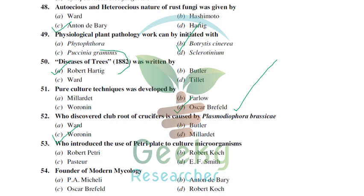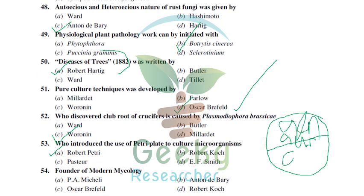Robert Petri introduced the use of petri plates in culture media. The standard petri plate is 9 centimeters (90 mm) in diameter. Robert Petri was an associate of Robert Koch, who introduced Koch's postulates.